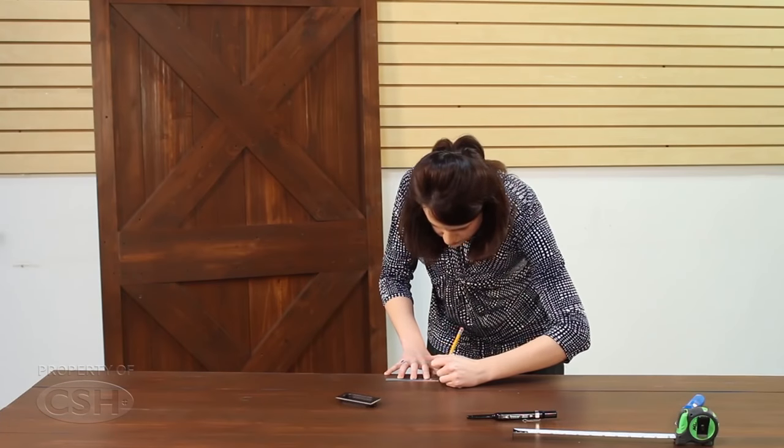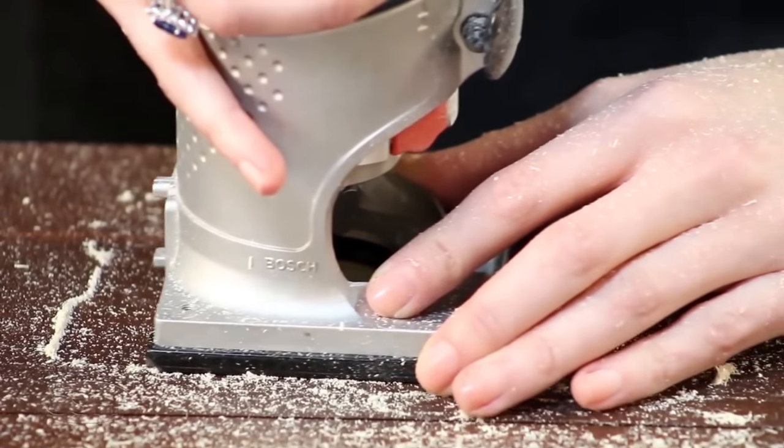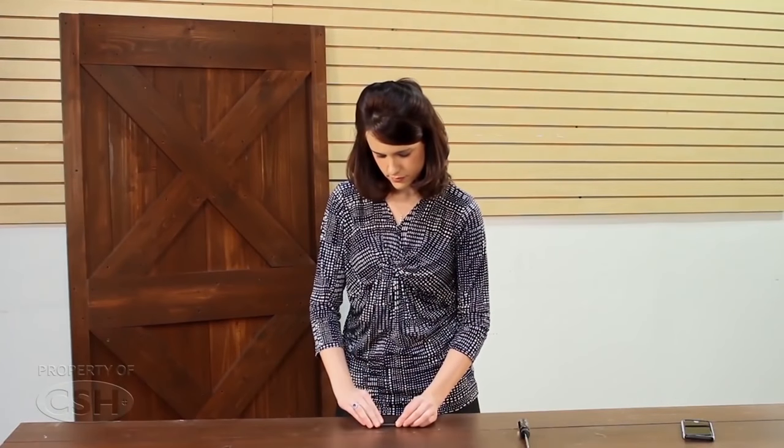Mark the location on the door for the flush mount pole. Be sure to make room for the door overlap in the opened and closed positions. Router out the door to the depth of the pole. Install the pole with the provided nails.